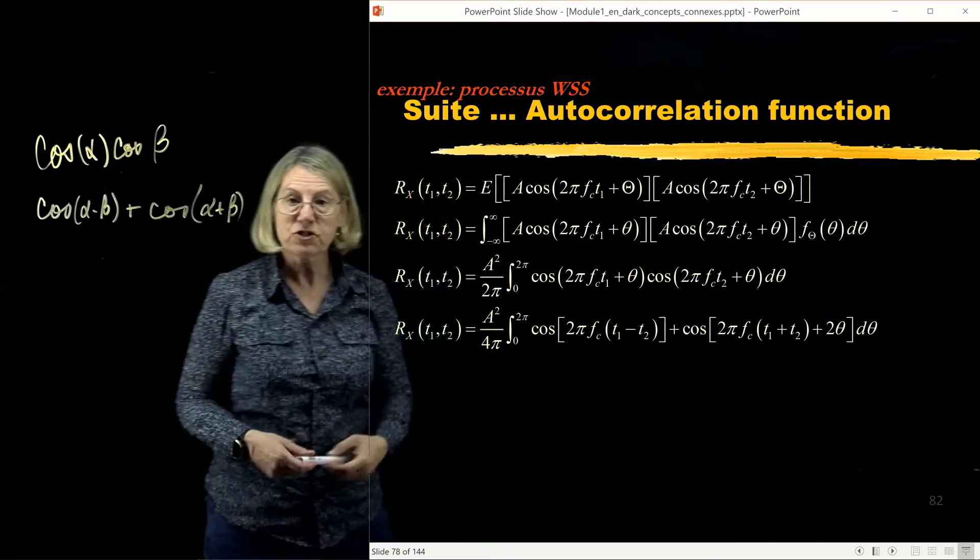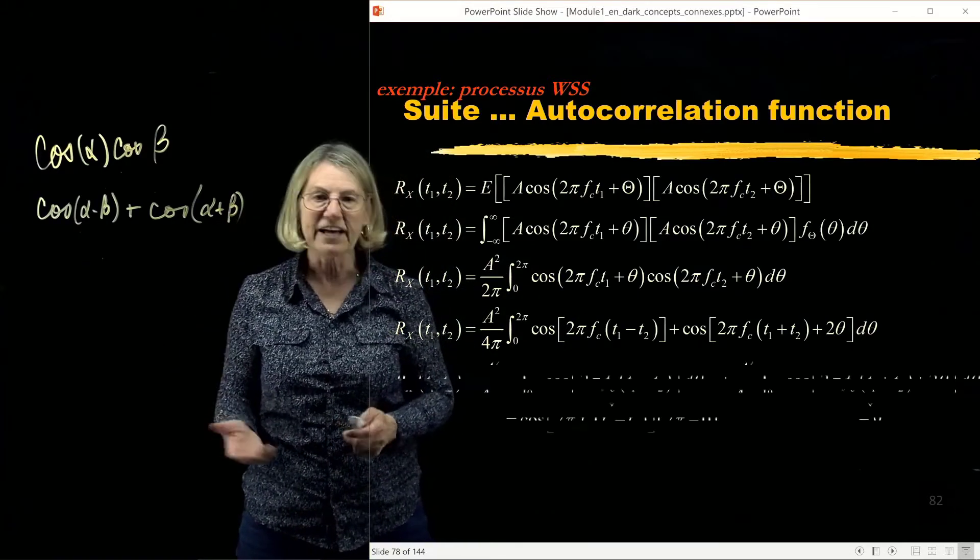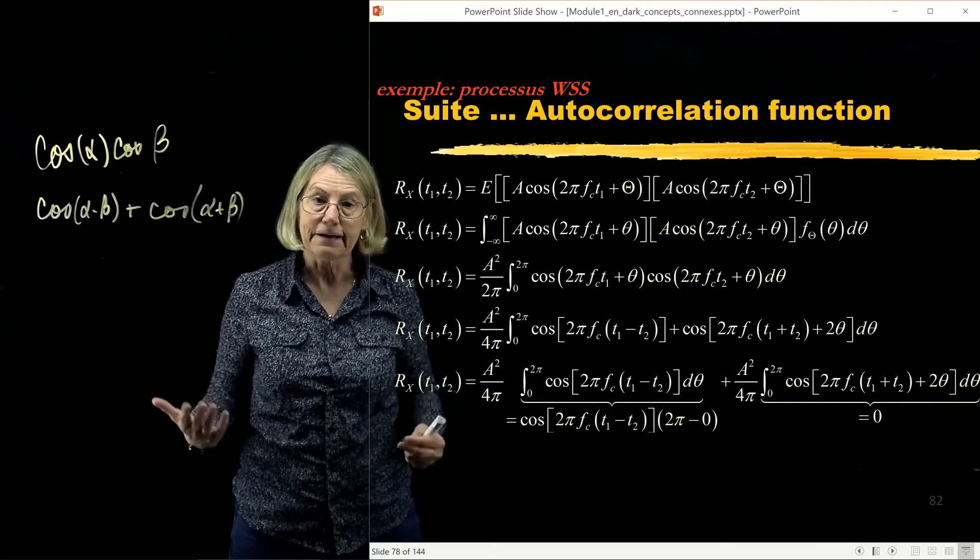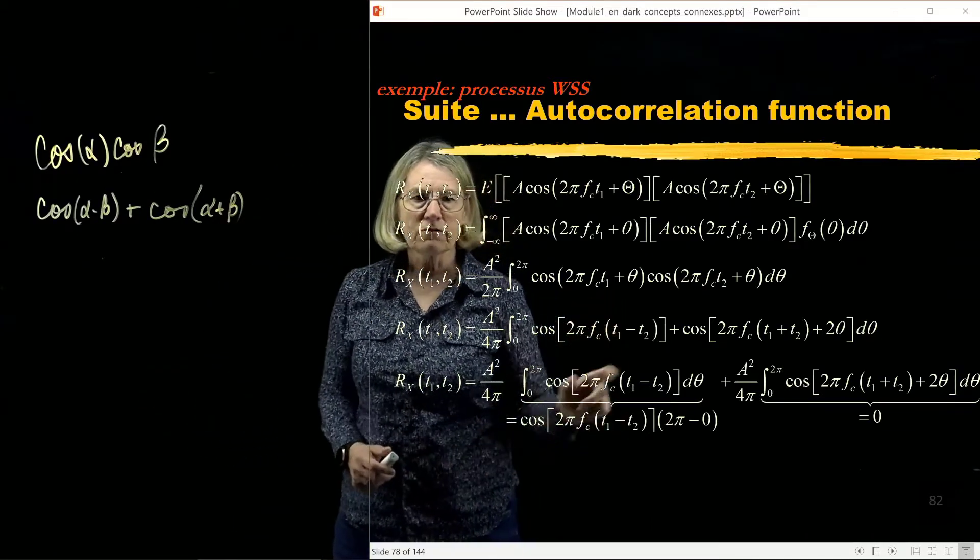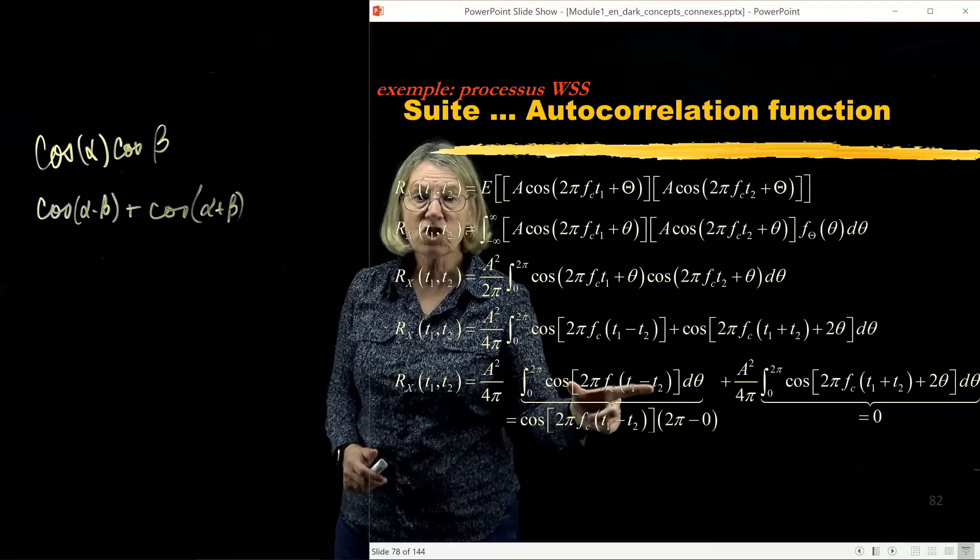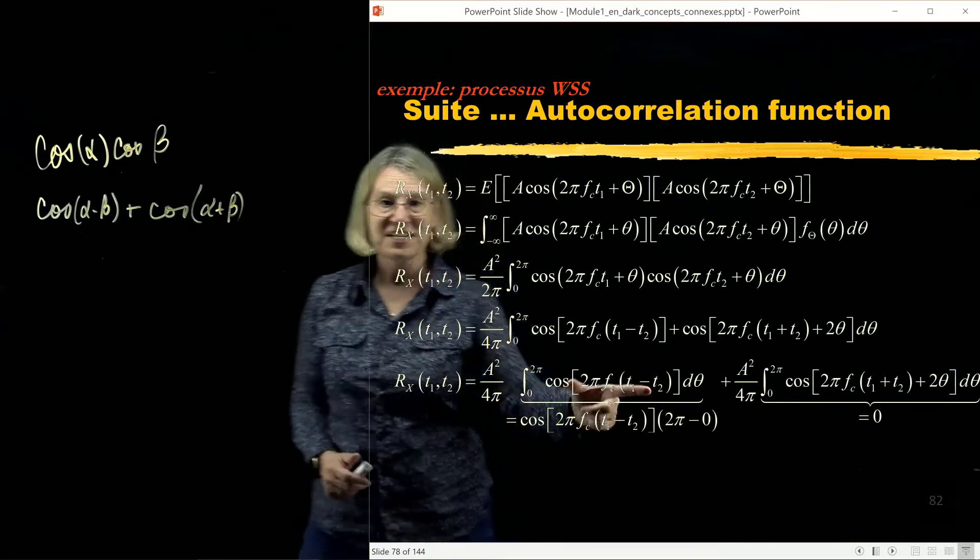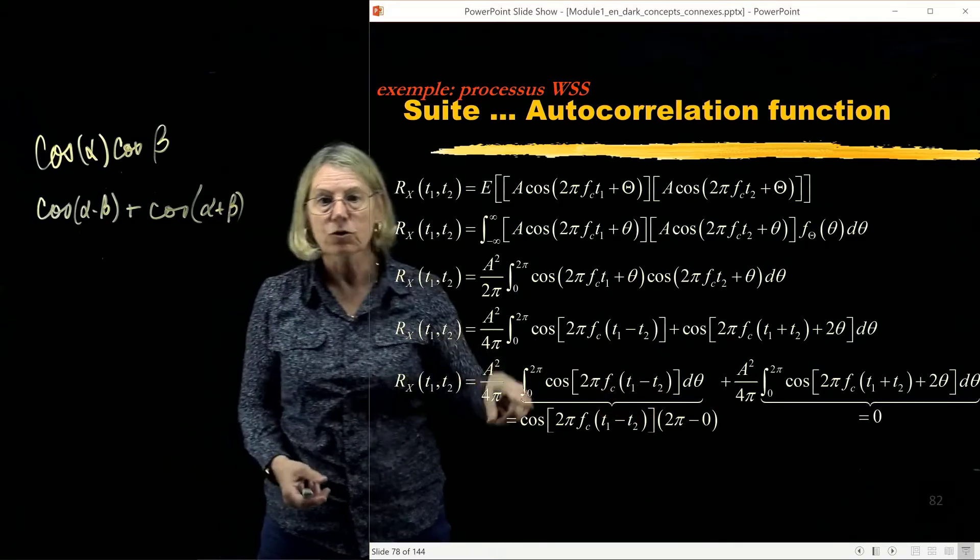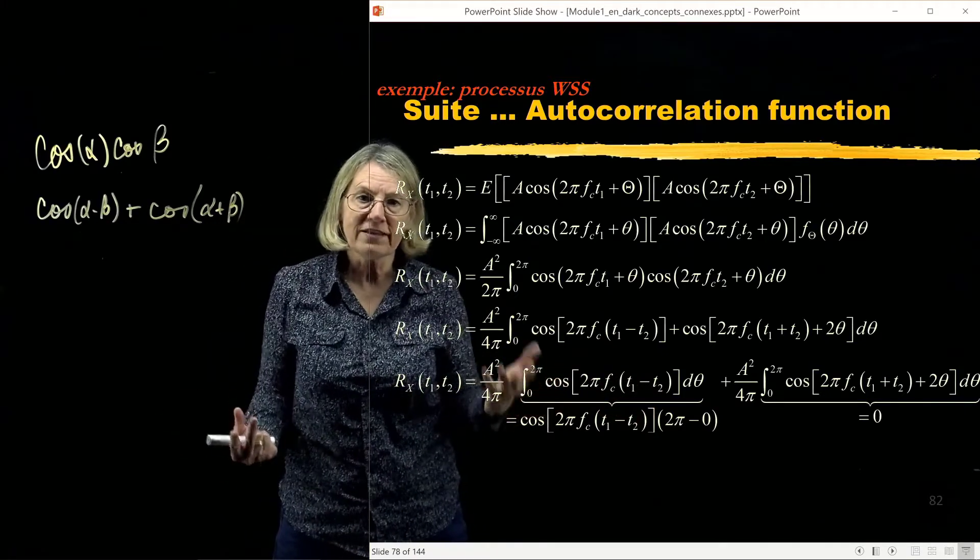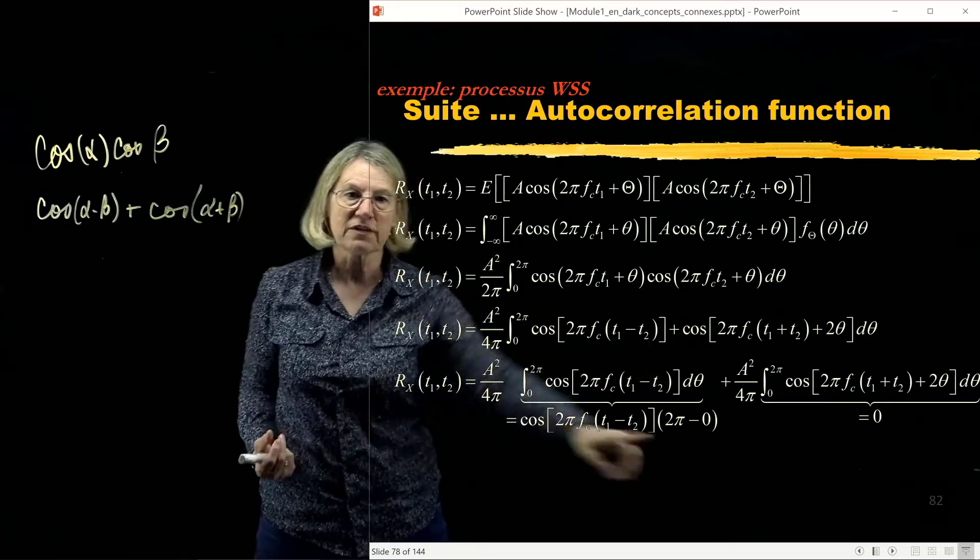So now I have two different integrals, a sum of two integrals, and so I can evaluate each one in the sum separately. So let's look at the integral of this cosine. Well first of all there's no theta in this cosine. So there's no theta in this cosine so I can actually bring it outside of the integral. And so what does the integral give me? The integral from 0 to 2π of dθ? Well it gives me 2π.